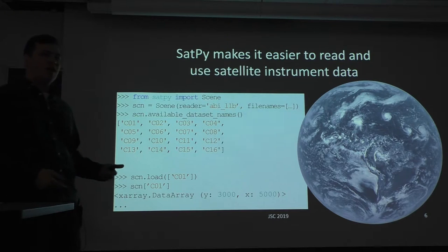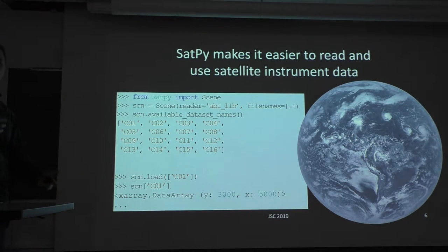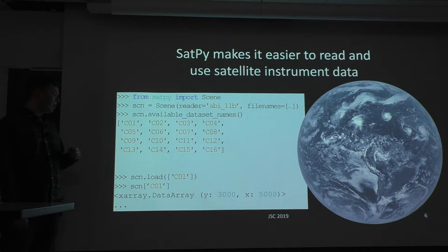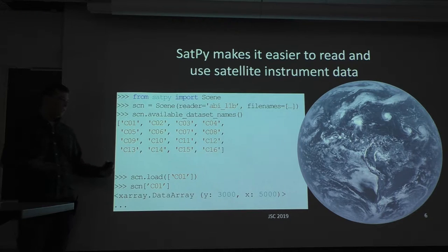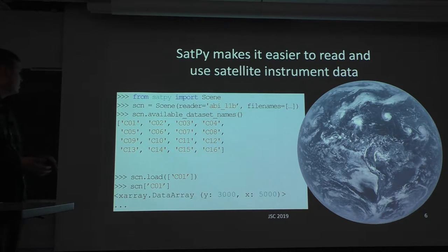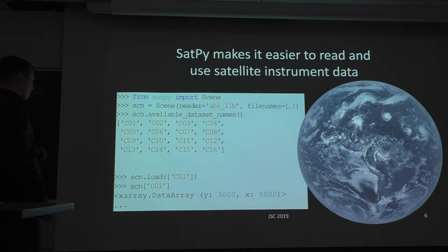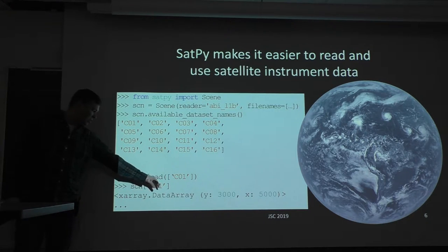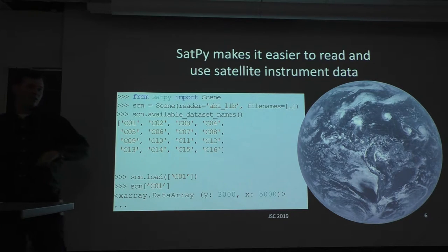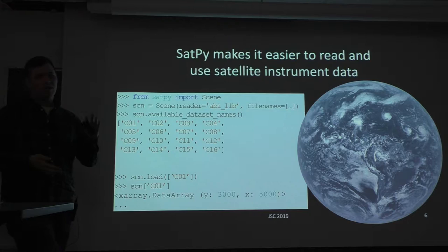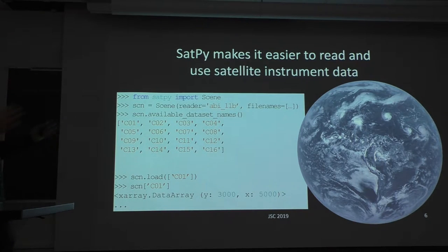What SatPy is doing is going to the files, reading them, doing the calibration to get it from radiances to brightness temperatures, handling missing values — all of that complexity with working with the channel data. In the load, it's also getting all of the metadata for that channel: standard name, units, all of the geolocation information, what projection it's in, what are the extents and bounds of this data. If I want to access that information, I use bracket syntax and say Channel 1, and it gives me an xarray DataArray — a popular Python library and all-in-one container for all that metadata, geolocation information, and band data. All there, easy to access.